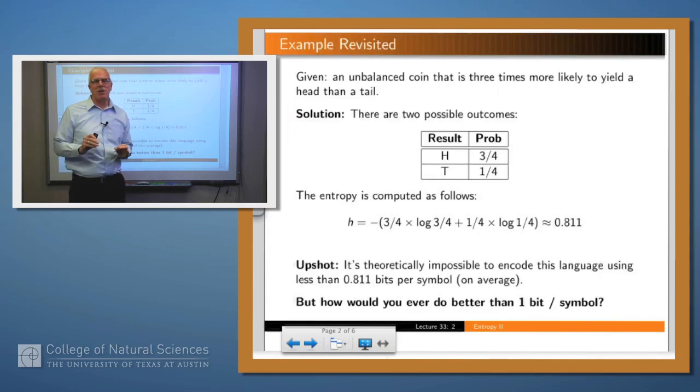I gave an example last time of the entropy of a very simple language. Suppose you have a coin that's unbalanced in such a way that it rolls heads three times as often as it rolls tails. That's a language with two symbols, heads and tails, where heads has probability 3/4 and tails has probability 1/4. We plug those numbers into our entropy formula and we came up with a number of 0.811.